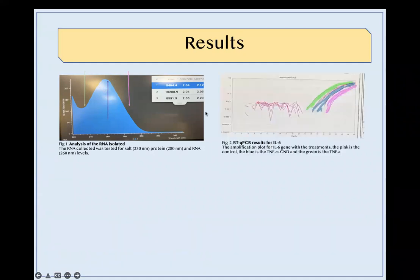We can see in figure 2 that the pro-inflammatory gene expression of IL-6 is low in the control because of its high cycle count, high in the TNF-alpha group because of its low cycle count, and the TNF-alpha plus CND group is in between.